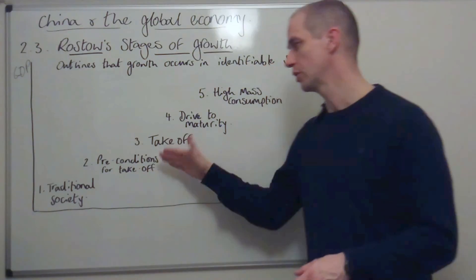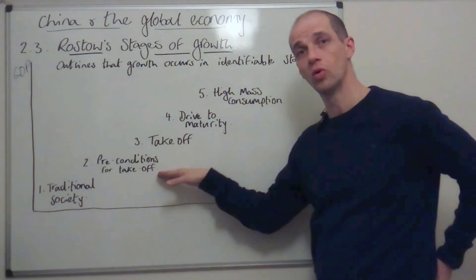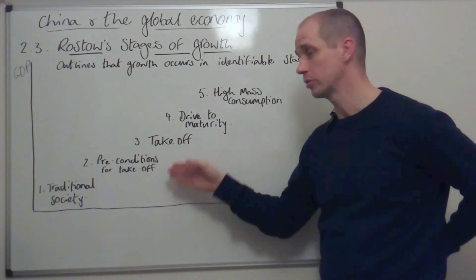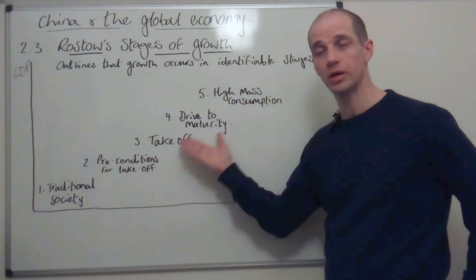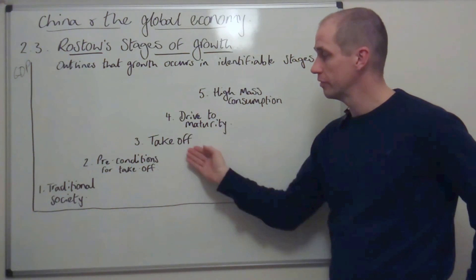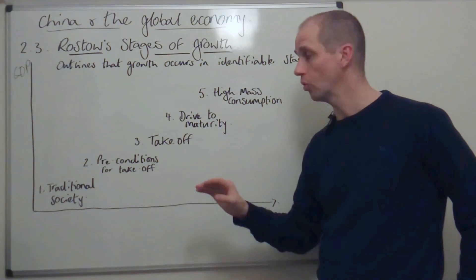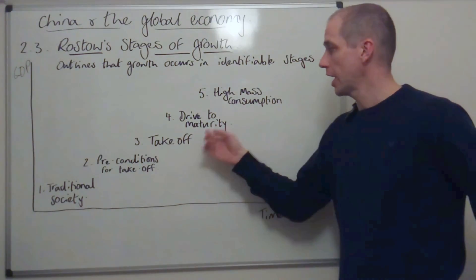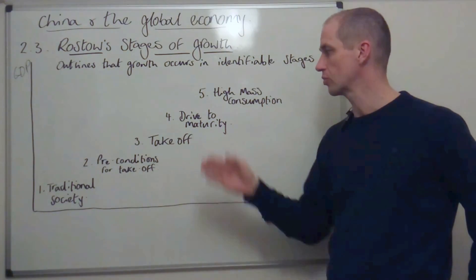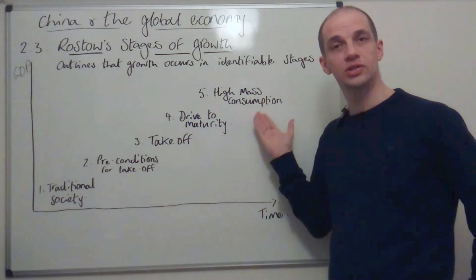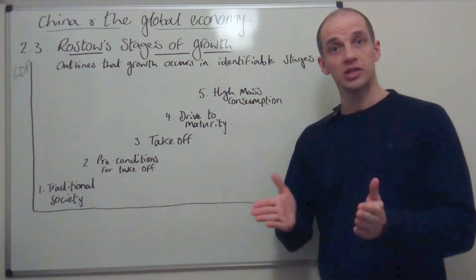Let's consider examples of economies at each stage. In the traditional society stage we might place very poor sub-Saharan African economies such as Mozambique, Chad, and Niger. Moving to preconditions for takeoff, Ethiopia is an example — still relatively poor but with some industrialization underway. China, along with economies such as Vietnam, can be placed in the drive to maturity stage. And those western developed economies — the MEDCs — sit in the high mass consumption stage.